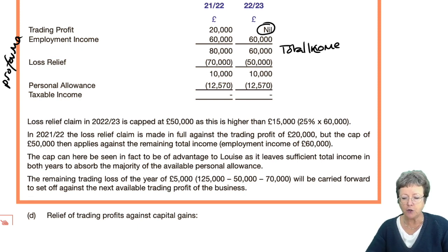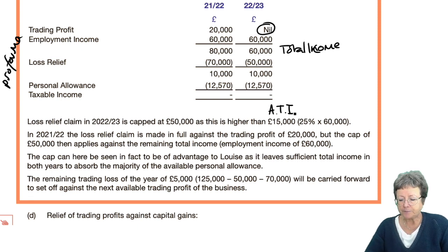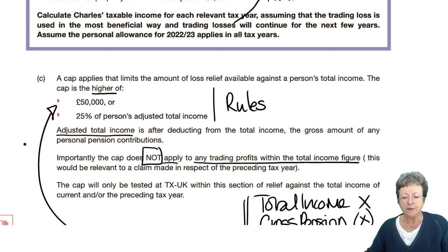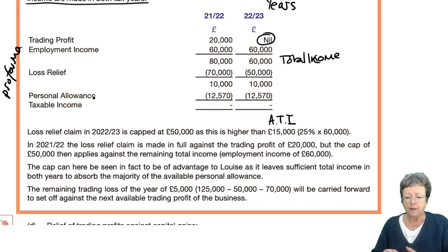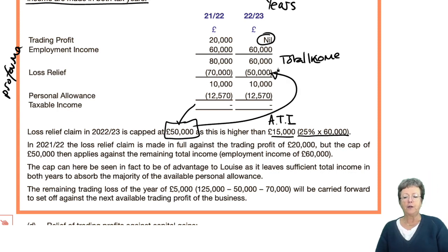The loss relief claim in 2022-23 is capped at £50,000, as this is higher than 25% of the adjusted total income, which is £60,000 × 25% = £15,000. So we've applied the rule: the cap that limits the amount of loss relief against total income is the higher of £50,000 or 25% of adjusted income. In this situation it's either £50,000 or 25% of her adjusted income, which is £15,000 — so £50,000 is the figure we choose.